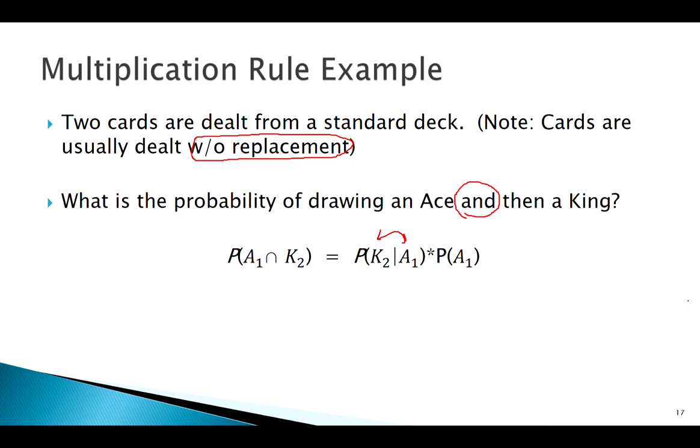The probability of an ace first is easy - 4 out of 52. But since I've got a conditional probability, knowing I got an ace first, how many kings does that leave in the deck? It leaves four, but it only leaves 51 cards total. So there's a slight difference in our denominator.